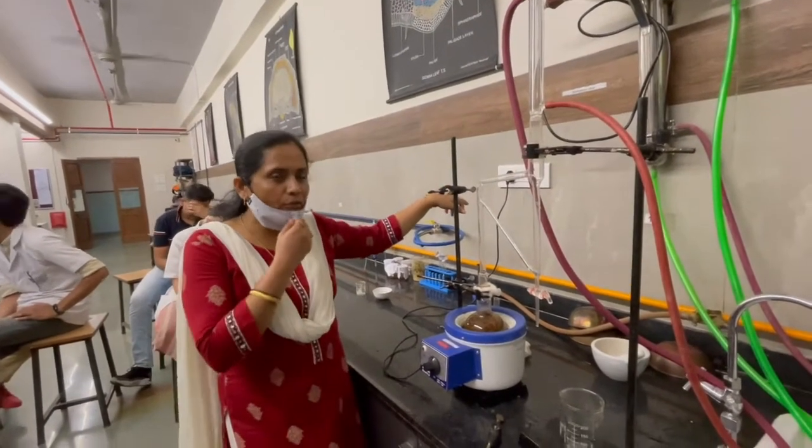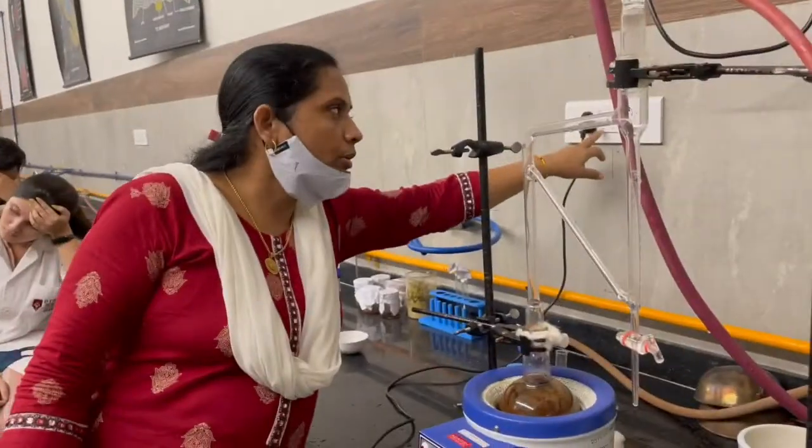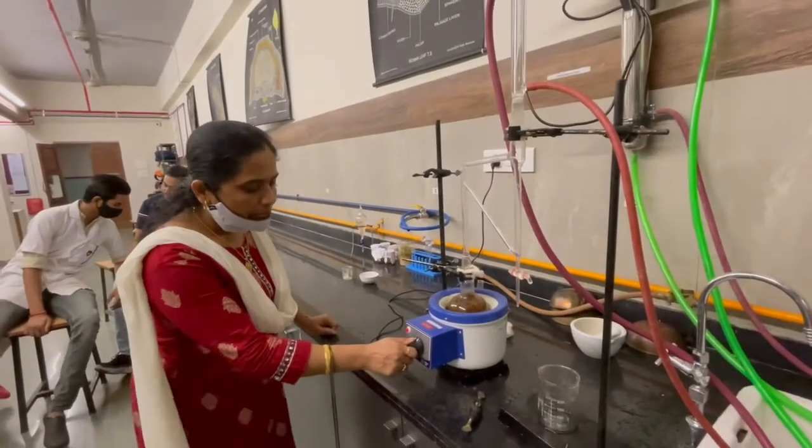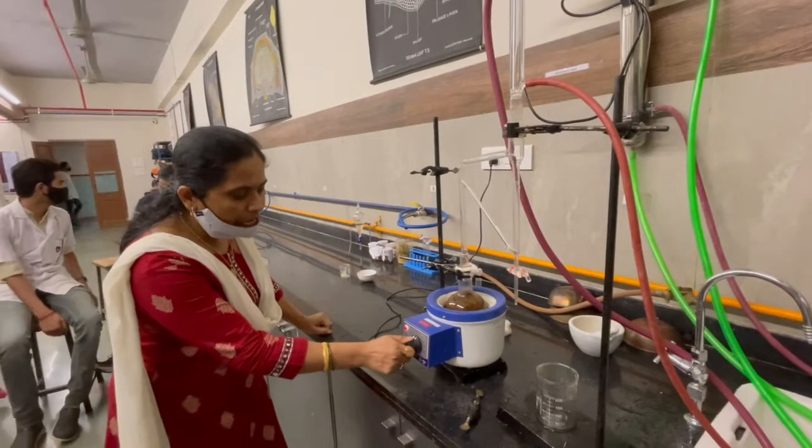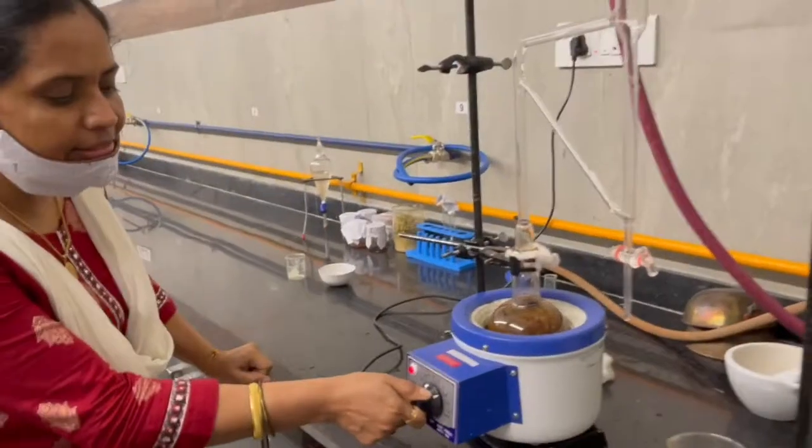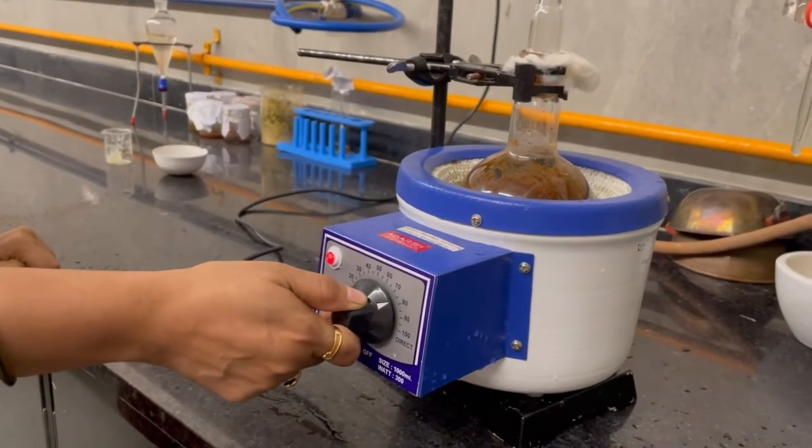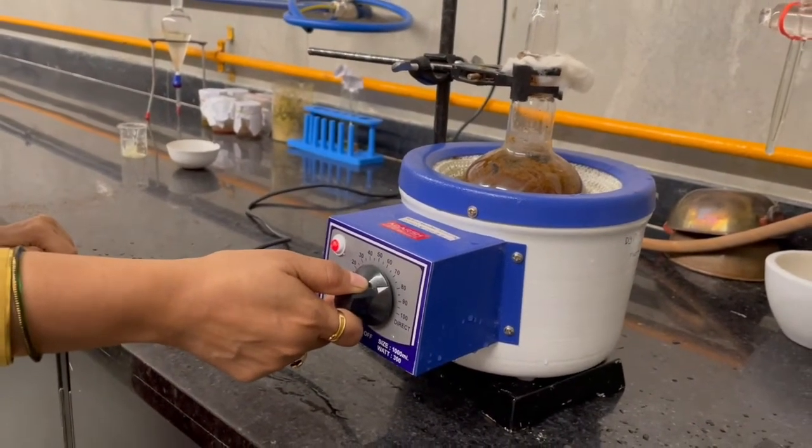Switch on the electrical supply, then adjust temperature around 80 to 90 degrees Celsius. We know that boiling point of water is 100 degrees Celsius, so we need to adjust temperature in between 80 to 90 degrees Celsius.